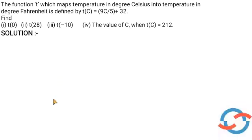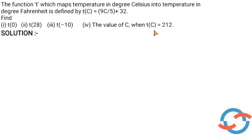Hi everyone, we will discuss the question. The function T, which maps temperature in degree Celsius into temperature in degree Fahrenheit, is defined by T of C equal to 9C by 5 plus 32. Find T of 0, T of 28, T of minus 10, and the value of C when T of C equal to 212.